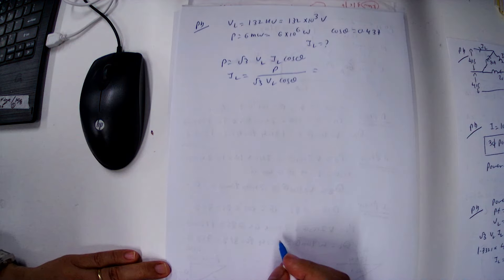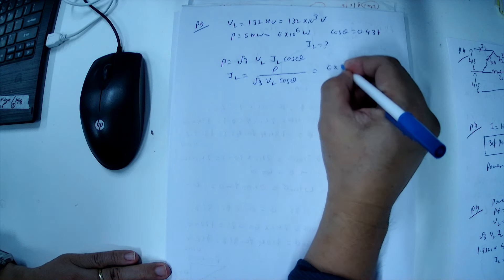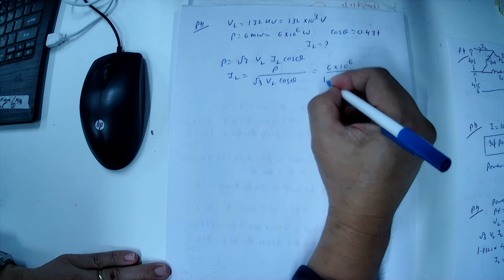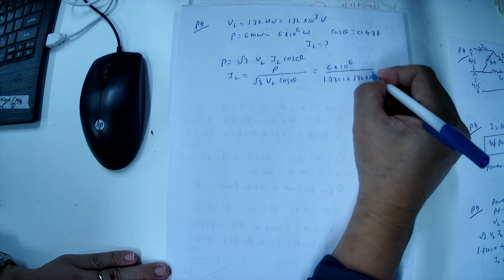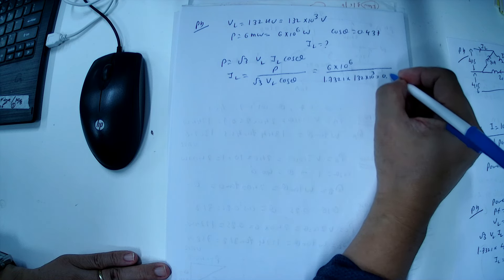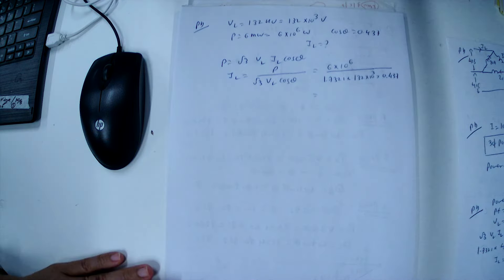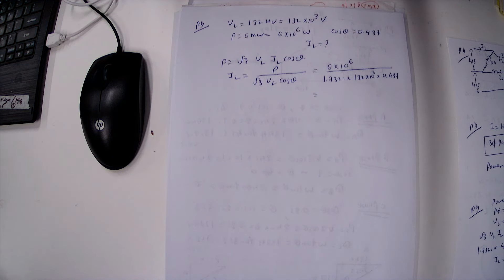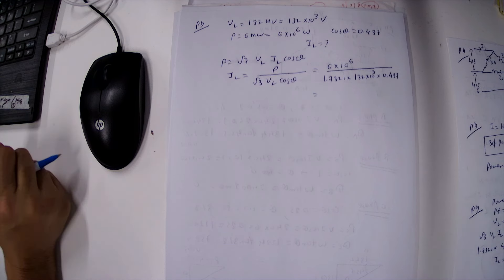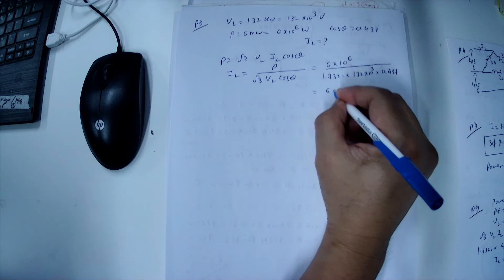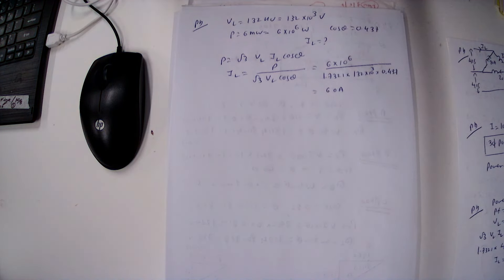IL equals P divided by root 3 VL cos theta. We substitute 6 into 10 power 6, divided by root 3, 132 into 10 power 3, and 0.437. When we calculate, we get 6000 divided by 1.7321, divided by 132, divided by 0.437. So the current is 60 amperes. This is the current taken from the supply.